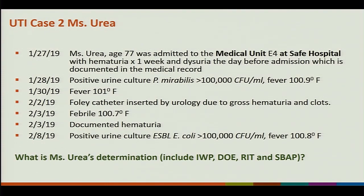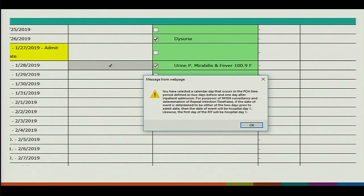Let's look at case two. We have Mr. Urea, who is age 77, who has a positive urine culture on 1-28 with greater than 100,000 Proteus mirabilis and a fever. Fever continues on 1-30. On February 2nd, the Foley catheter is inserted by urology due to gross hematuria and clots. We have a fever on 2-3, some dementia, and a positive urine culture of E. coli ESBL of greater than 100,000. So what is Mr. Urea's determination? IWP, DOE, RIT, SBAT.